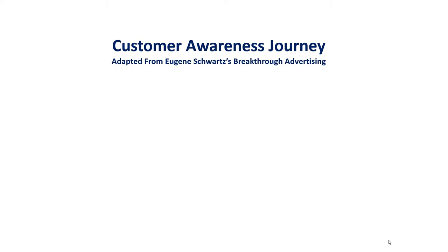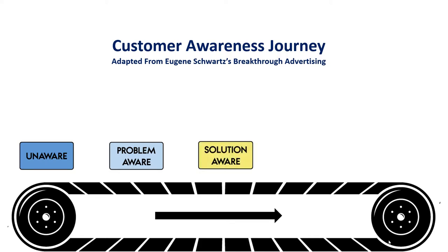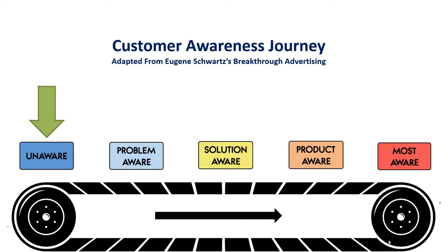Using this customer awareness journey — adapted from Eugene Schwartz's brilliant book, Breakthrough Advertising — I created this conveyor belt. Most people start in the unaware stage: unaware they have a problem, unaware of any solutions. Then they become problem aware, then solution aware, then product aware, and finally most aware. Most marketers focus on that small 'most aware' section — it's the smallest, most competitive, and most expensive part of the market. What I want you to do is focus on the unaware part of the market — get involved right from the very start.